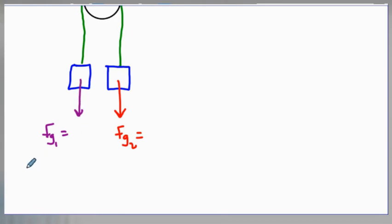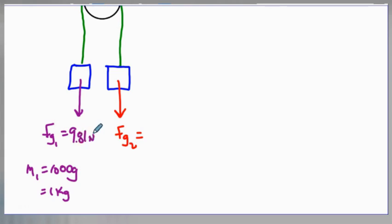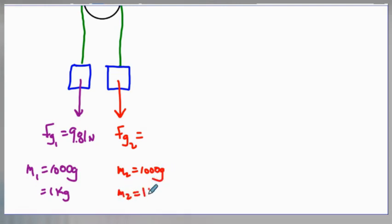Once again it was 1,000 grams, so I'll call this on the left m1 — 1,000 grams converts to one kilogram. Force equals mass times acceleration, so this has a downward force of 9.81 newtons due to gravity. For the exact same reason, m2 — which was also 1,000 grams, one kilogram — has a downward force of 9.81 newtons. Remember that the pulley simply changes the direction of the forces.